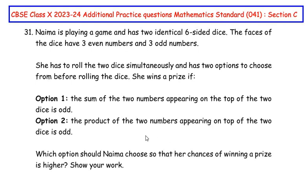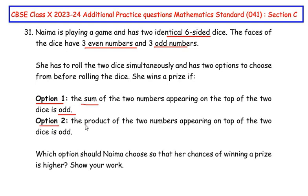This question is from the probability chapter. Naima is playing a game and has two identical six-sided dice. The faces of the dice have three even numbers and three odd numbers. She has to roll the two dice simultaneously and has two options to choose from before rolling. She wins a prize if option one — the sum of the two numbers on top is odd — or option two — the product of the two numbers on top is odd. Which option should Naima choose so that her chances of winning are higher? Show your work.